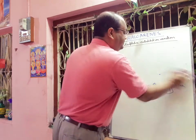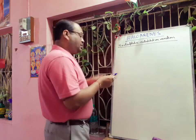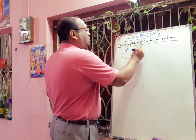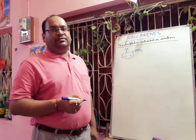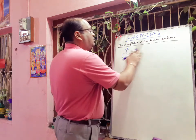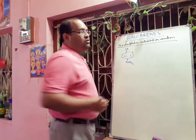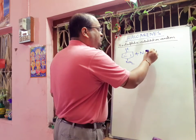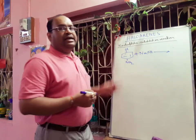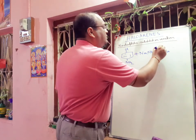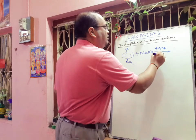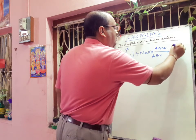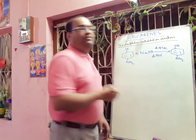For example, ortho-nitrochlorobenzene or para-nitrochlorobenzene treated with sodium hydroxide solution at 443 Kelvin, followed by acidic workup, gives para-nitrophenol.